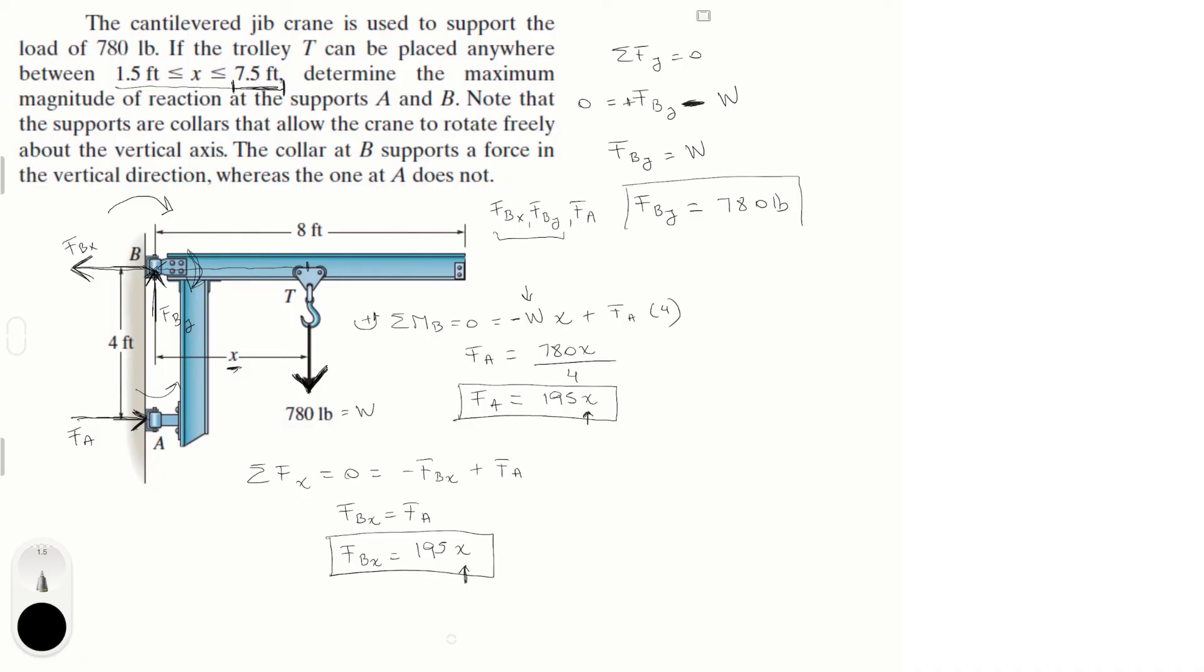So F of B of y is unchanged, and F of B of x gets bigger as x gets bigger. So I would say that the maximum load is at F of A is equal to 195 times 7.5, which is the maximum length of x, which means that that is equal to 1462.5 pounds for F of A.